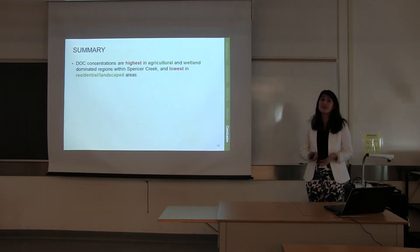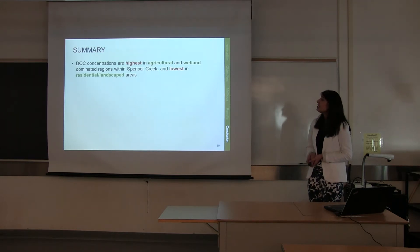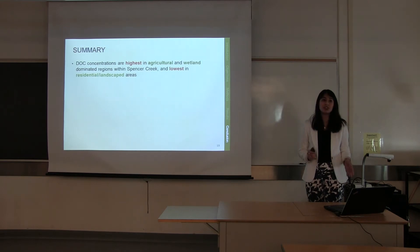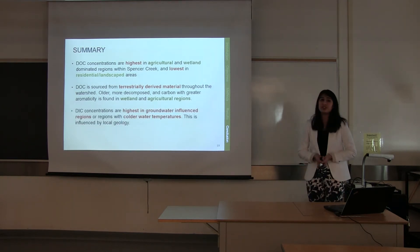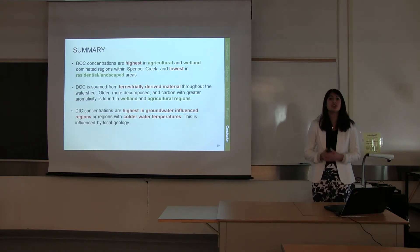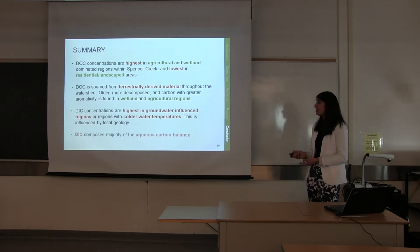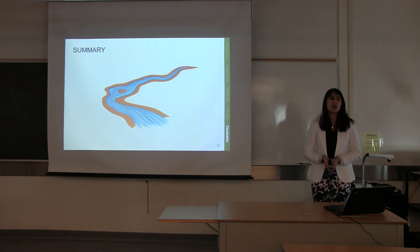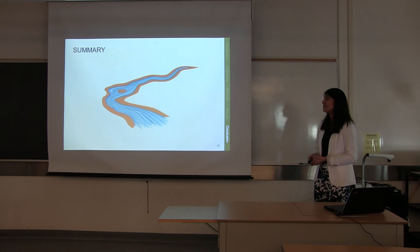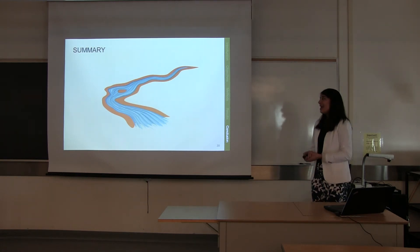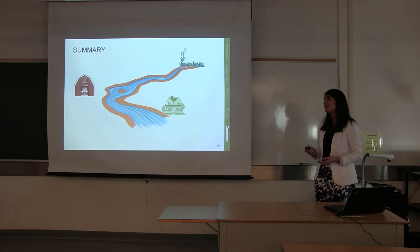In conclusion, DOC concentrations were highest in agricultural and wetland dominated regions within Spencer Creek watershed and lowest in residential and landscaped areas. DOC is sourced from terrestrially derived material throughout the watershed, with more decomposed, complex carbon structures in wetland and agricultural regions. DIC concentrations were highest at groundwater-influenced sites showing lower stream temperatures, influenced by local geology. DIC composes the majority of the aqueous carbon balance. Understanding land use influences on DOC and the aqueous carbon balance is important in the bigger picture, as carbon balance in water is equally critical to that in the atmosphere.